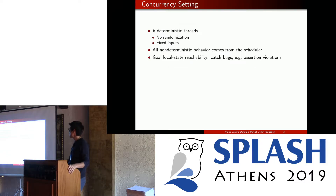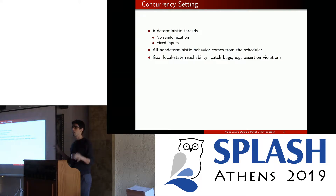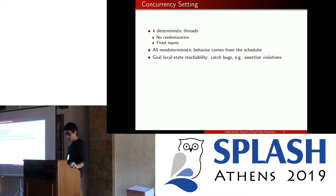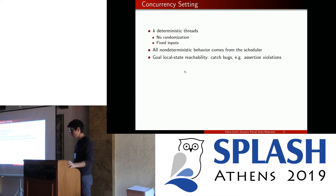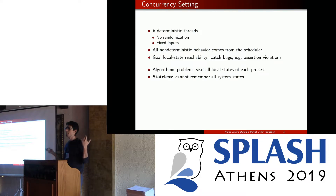A few words about the concurrency setting I'm considering here. I have K deterministic threads running over a sequentially consistent shared memory. There's no randomization and all inputs are fixed, so all the non-determinism in the execution of the system comes from the scheduler. What I want to do is check this system for safety violations on local states — basically catch bugs like assertion violations.